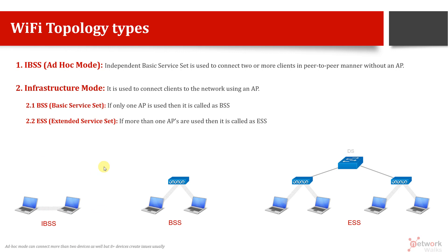With more than two devices, it is recommended not to go with IBSS — we should go with BSS. BSS means there is a central device, an access point or a Wi-Fi router in between. Devices send their signals to the access point, and the access point forwards the data to the other devices. For example, if you want to share a file, it will be shared through the access point. Both BSS and ESS fall under infrastructure mode, while IBSS is called ad hoc mode.